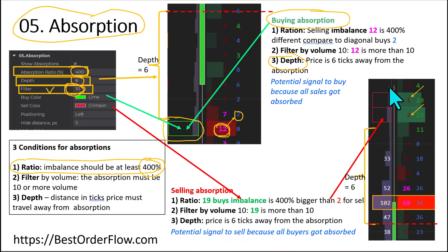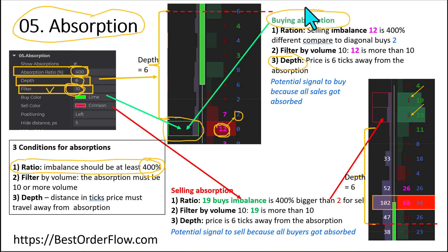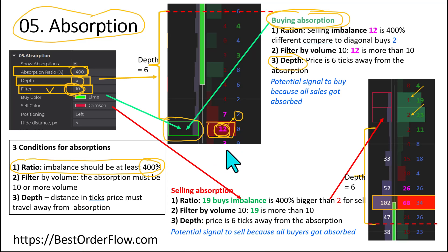Selling absorption means all these extreme buyers with their imbalances are no longer able to move the price up — it becomes a signal for a sale. For buying absorption, aggressive sellers create an imbalance and try to sell, but all their sales are absorbed and no longer move the price down. That's why buying absorption is a potential signal to buy, and the price actually went higher creating a green candle.